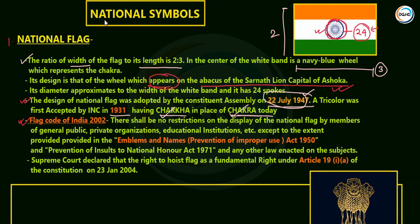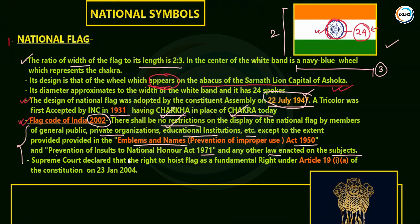An important fact is the Flag Code of India 2002, which provides that there shall be no restrictions on the display of the national flag by members of the general public, private organizations, and educational institutions. There is no restriction on displaying the national flag, provided we do not insult it and do not violate the Emblems and Names (Prevention of Improper Use) Act 1950, and the Prevention of Insults to National Honour Act 1971.